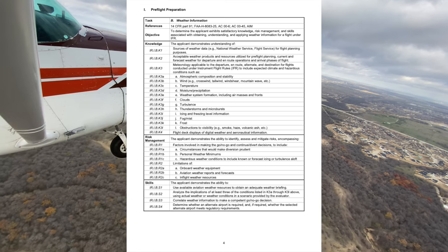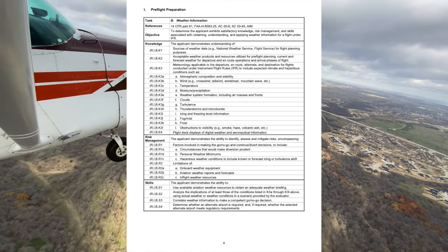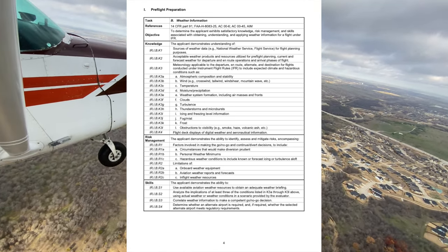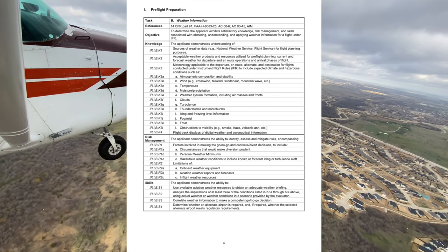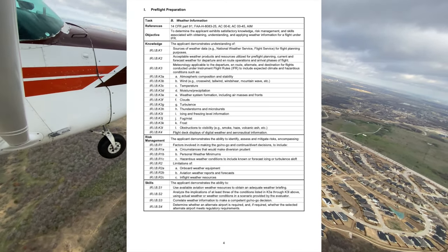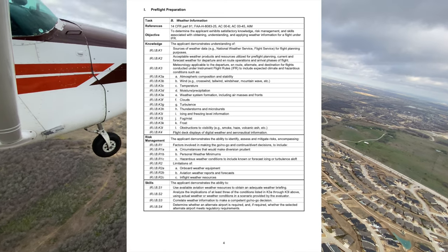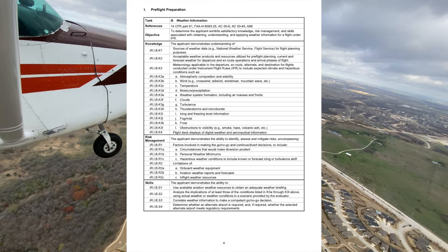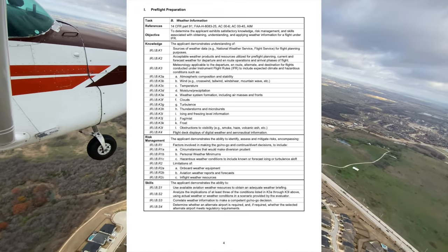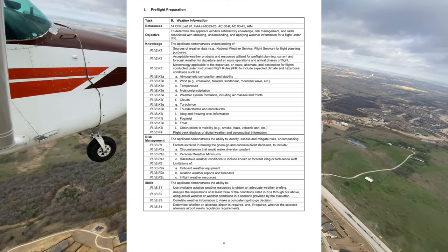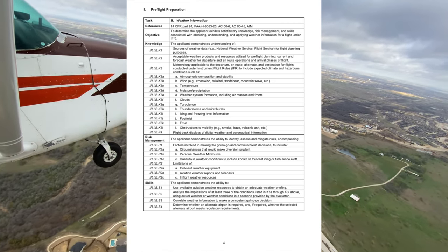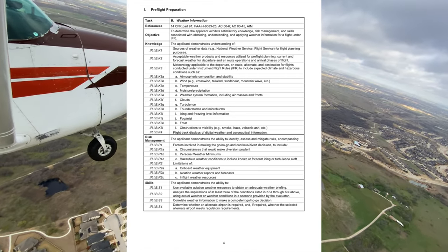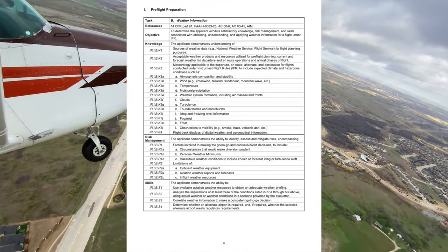Another thing to consider are alternate GPS considerations. If your alternate has a GPS approach, you must consider WAAS versus non-WAAS GPS. WAAS can be used at either the destination or alternate, but not both. A WAAS GPS with Baro-VNAV — LNAV/VNAV — can be used at both destination and alternate. A WAAS-equipped GPS without Baro-VNAV — LNAV — can also be used at both. This can get confusing, so ask your instructor if needed.